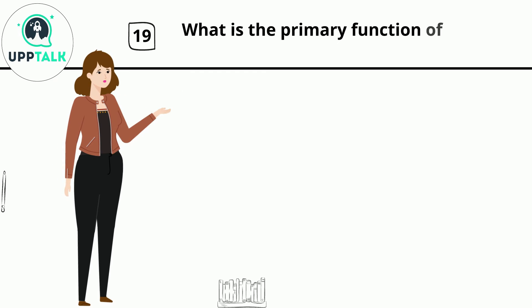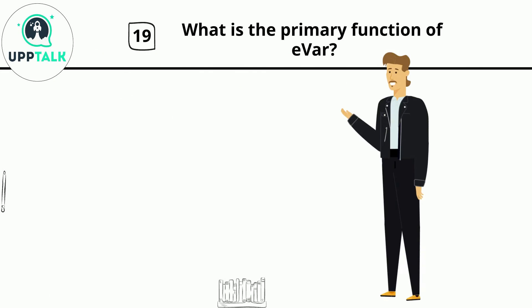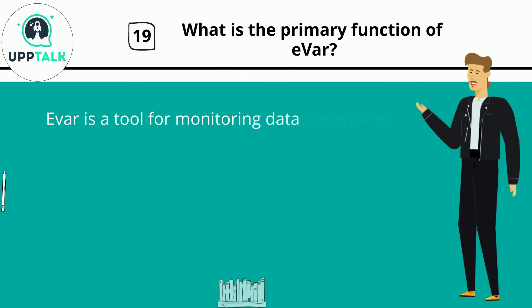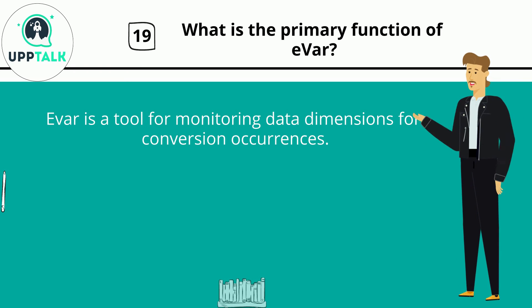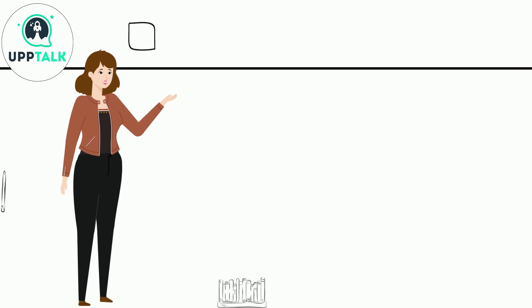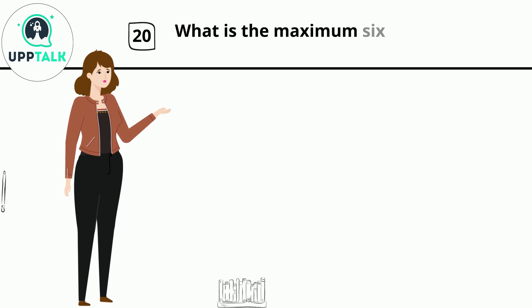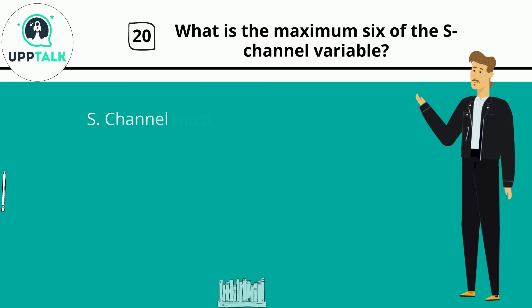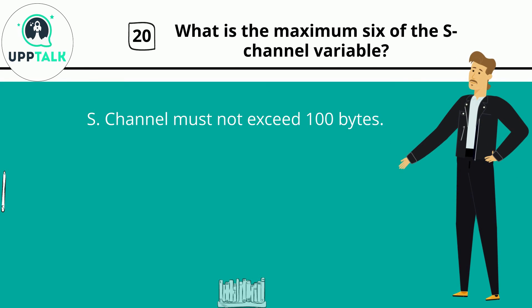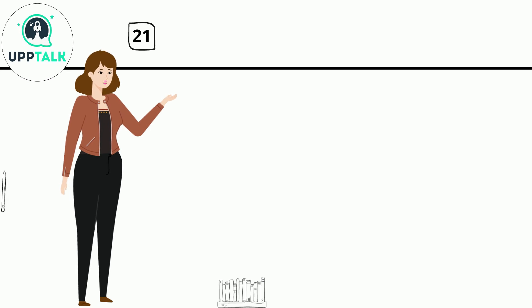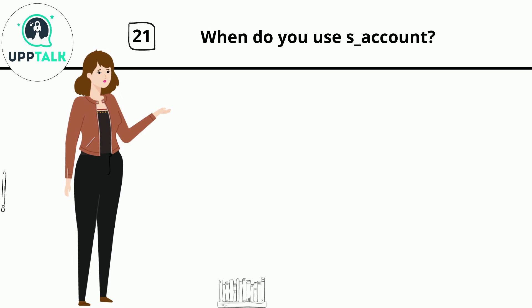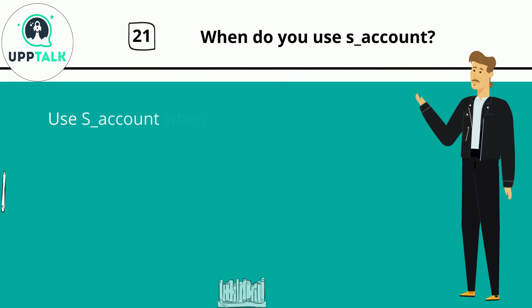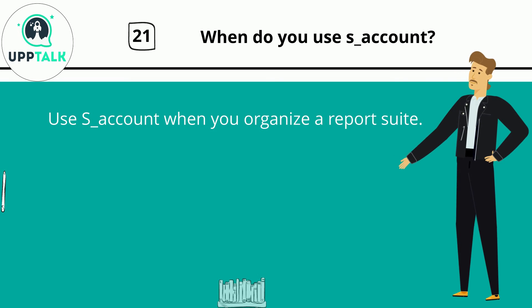Question 19: What is the primary function of EVAR? EVAR is a tool for monitoring data dimensions for conversion occurrences. Question 20: What is the maximum size of the s.channel variable? The s.channel must not exceed 100 bytes. Question 21: When do you use s.account? Use s.account when you organize a report suite.